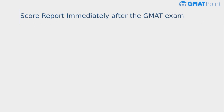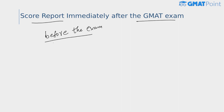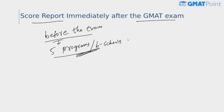On your exam day, before you start your exam, you have the option to send your scores to up to five B-schools or programs. This service is included within the registration fee, so you don't pay anything extra to send scores to up to five B-schools. Choose carefully because once chosen, you cannot modify these programs. You can send score reports to more than five programs, but you will be charged an additional fee.